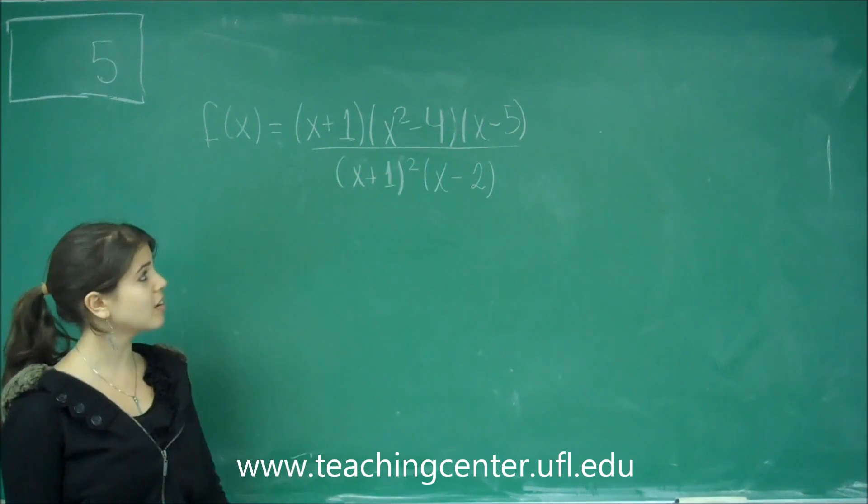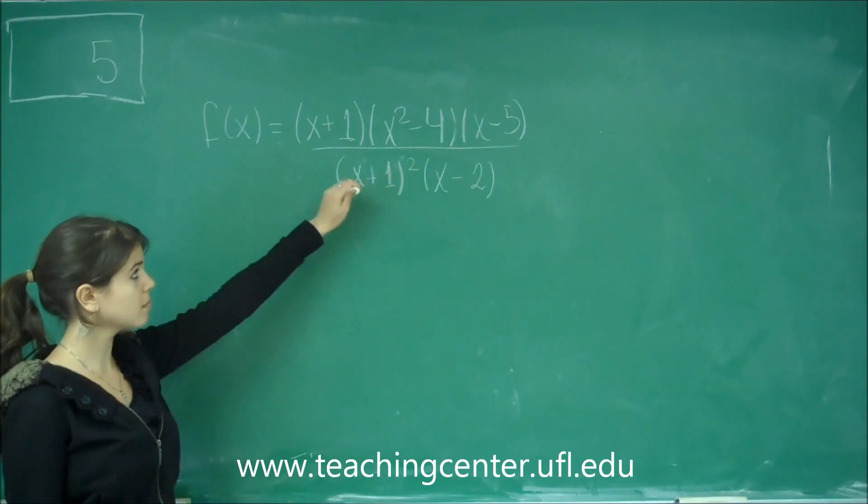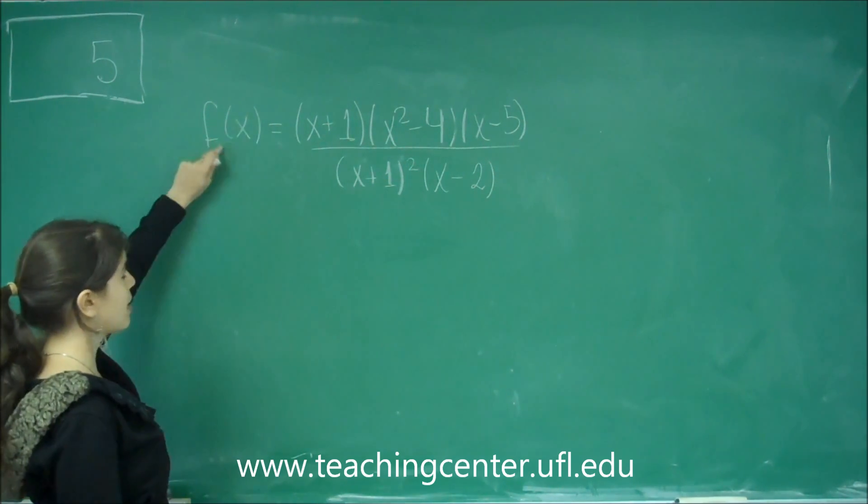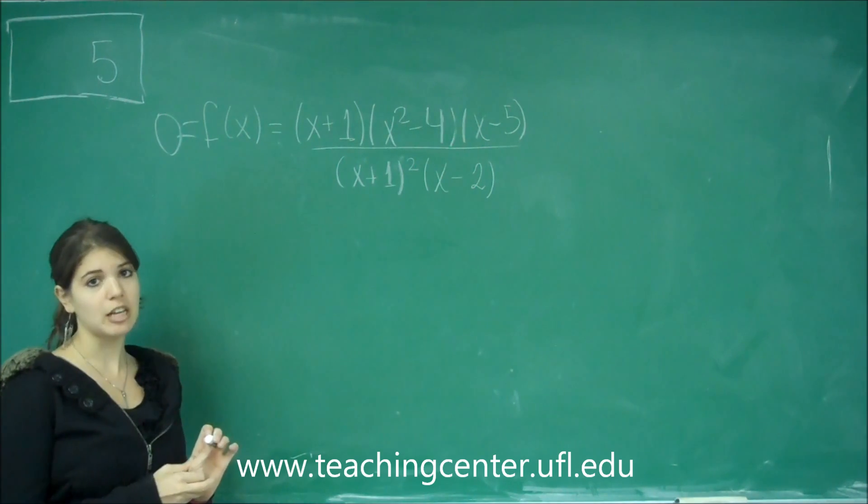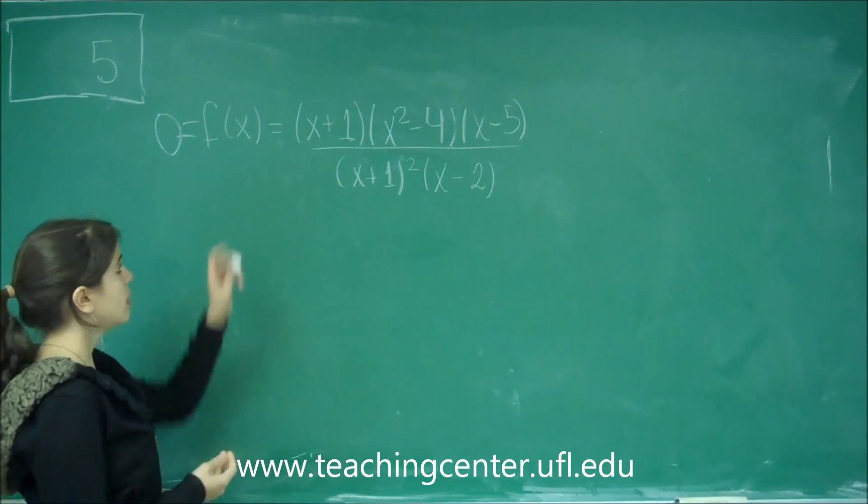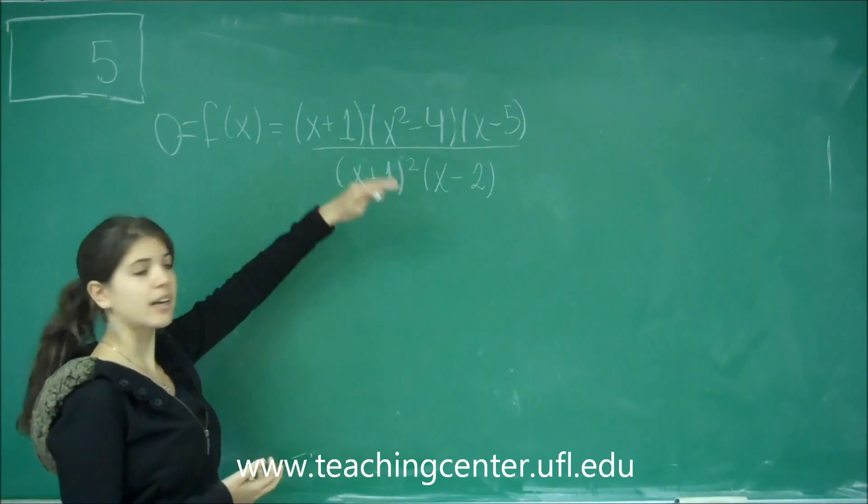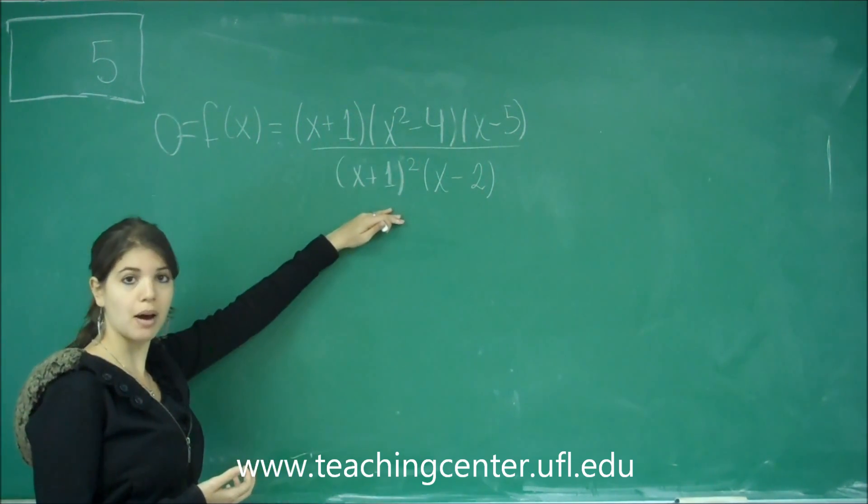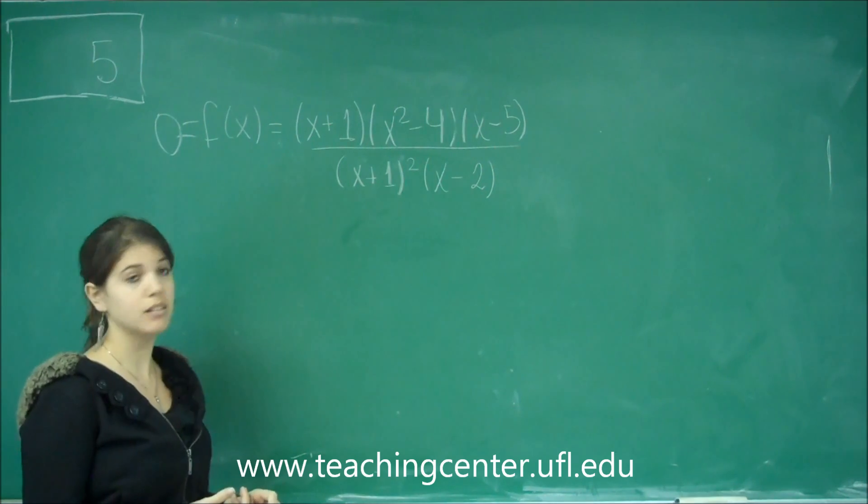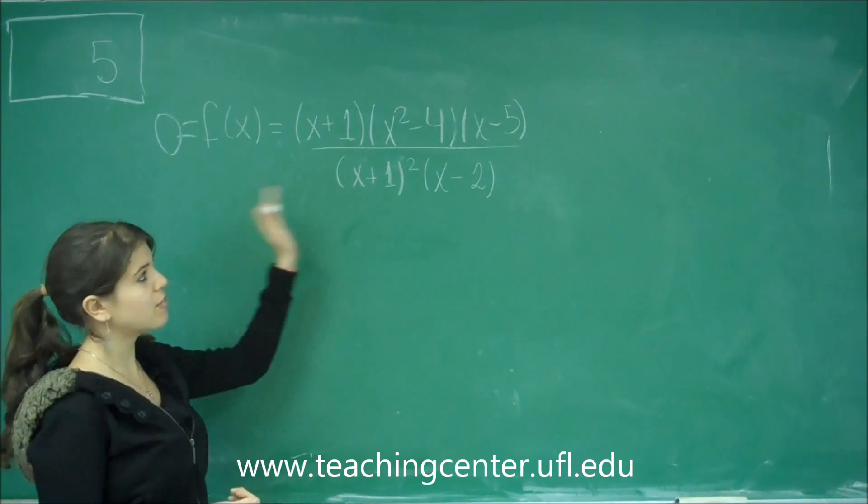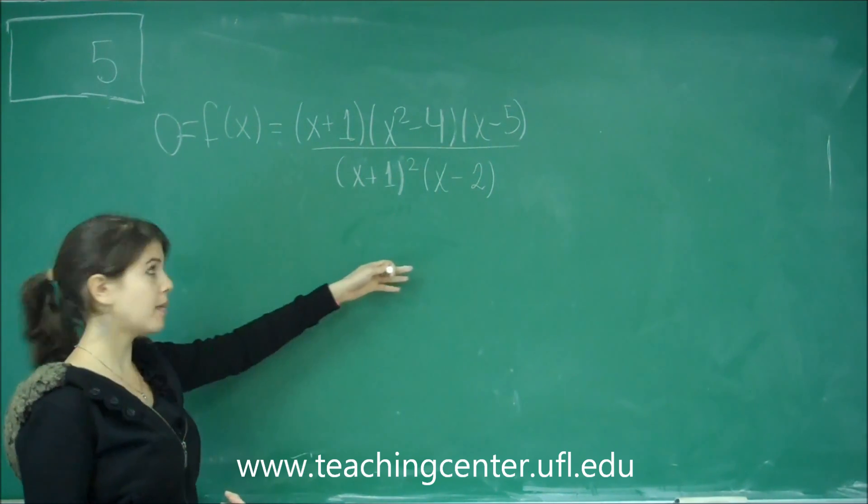To find the zeros, we need to find all the values on the top where f of x equals 0. But also, we want to make sure that we eliminate any holes that there might be in the function. Holes means that any factors on the top that cancels with a factor on the bottom, that would be a hole and not an actual point on the x-axis. Let's go ahead and completely factor anything that hasn't been completely factored to see if anything cancels on the top and the bottom.